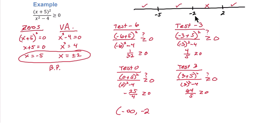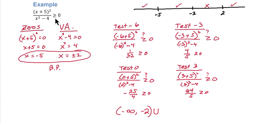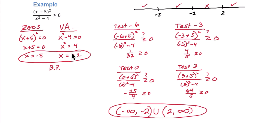Now we have to ask, can we include the negative 2? We have equality, but negative 2 is not a zero — it's a vertical asymptote. So we can't include it. Even though we have equality, we cannot include the negative 2 because it's an asymptote, so we will use a parenthesis, not a bracket. Then we'll use a union to join that to the other interval that is true, 2 to positive infinity. We have to ask, can we include the 2? We have equality, but 2 is a vertical asymptote — it cannot be included. So we will use a parenthesis, 2 to infinity. And we have our solution.